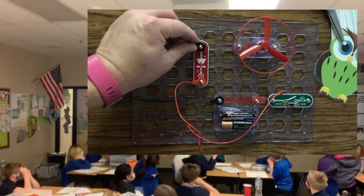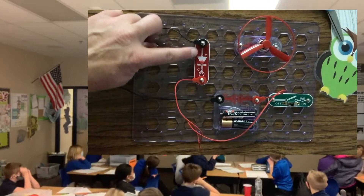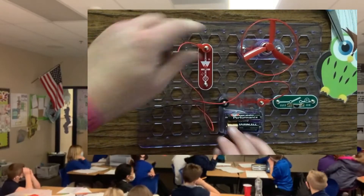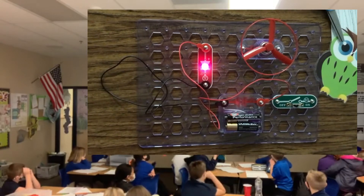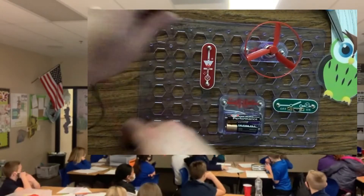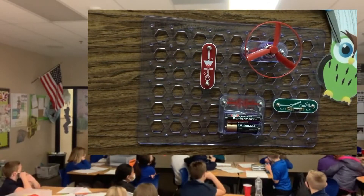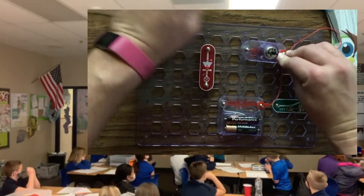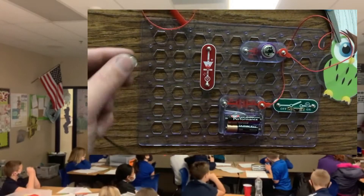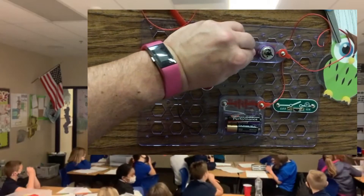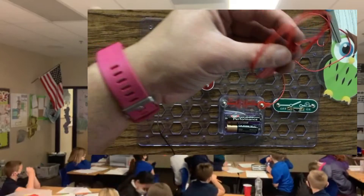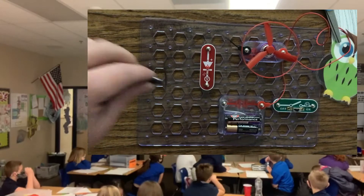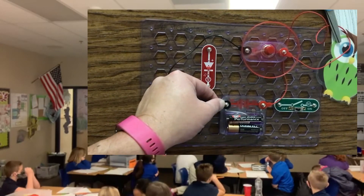This one has a specific direction that it has to go — notice the arrow on it. The positive has to come from that side, otherwise the current's not flowing in the right direction. Red goes to positive, black goes to negative, and generally speaking black will always be your negative.